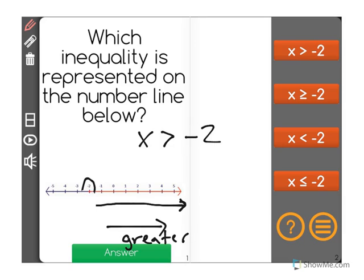But what's important here? Make sure you double check. We have a closed circle on negative 2. When you see a closed circle, that means that negative 2 is a possible value as well.